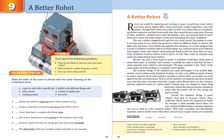The way a snake is shaped lets it get into very small spaces, like cracks in rocks. It can also push its way below the ground, or climb up different kinds of objects, like high rocks and trees. Such abilities account for the usefulness of a robot designed like a snake.